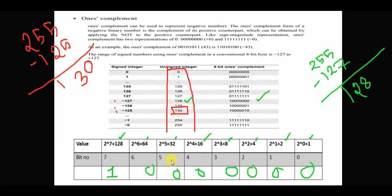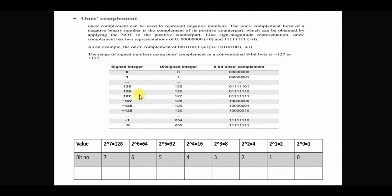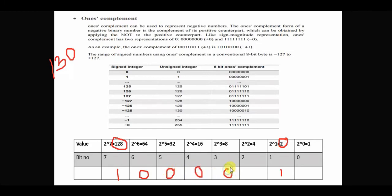How does 130 represent in one's complement? Counting: 1, 2, 1, 2, 1, 2, 2, 1, then 0. So this is how it counts. Now it's easy to write. How does it count? Starting from 0 — what does 0 correspond to in terms of 255?